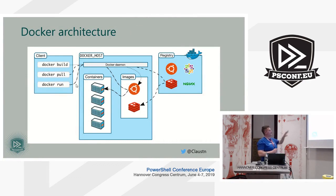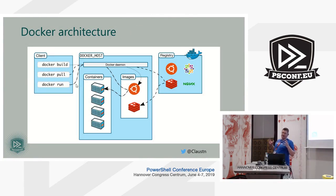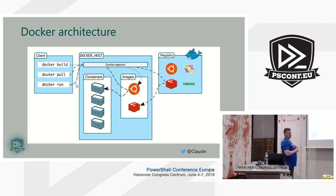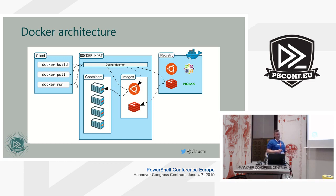Then we have the concept of a registry. Docker runs one of the biggest registries, and Microsoft runs their own registry as well. The registry is a catalog of images. If you don't have an image on your local machine when you try to start up a Docker container, it will go to the registry and pull it down and execute it.